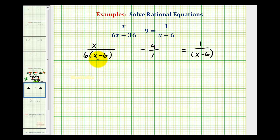The next step is to identify what would be the least common denominator. Well, the least common denominator would have to contain a factor of six and a factor of x minus six.